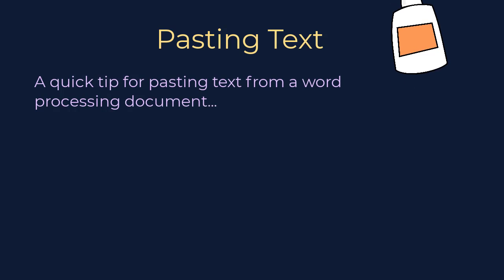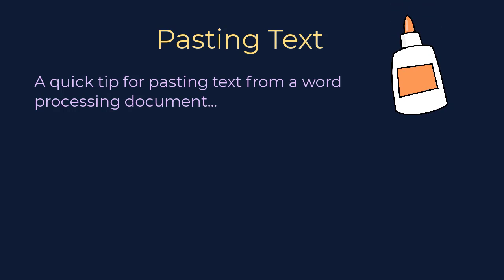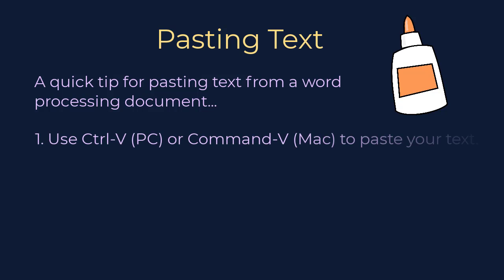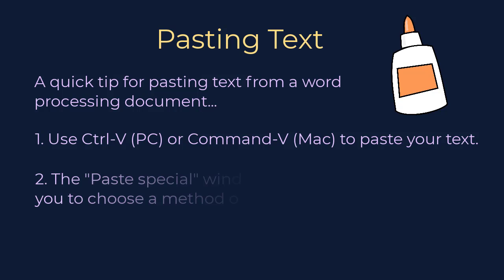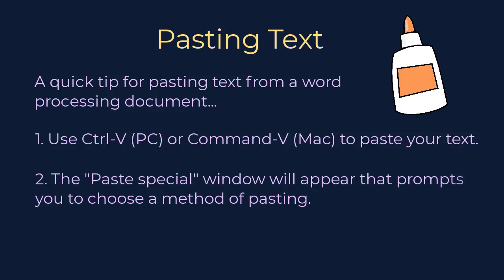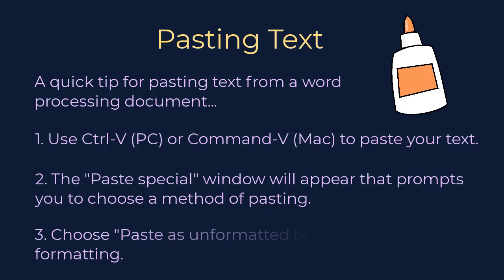Pasting. When you paste from a document, the pasted text brings HTML code from the program where it was created, which causes formatting and display issues in Moodle. You can avoid this by using Control-V on your PC or Command-V on your Mac to paste your text. The Paste Special dialog box will appear, prompting you to choose a method of pasting. To paste without formatting, choose Paste as Unformatted Text, and this will add the text with Moodle's default font type, color, and size. Be aware that this method will strip all formatting from your text.